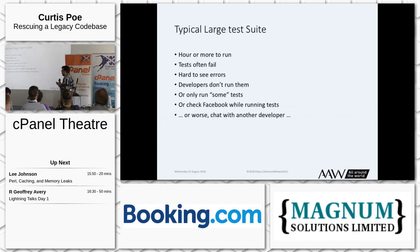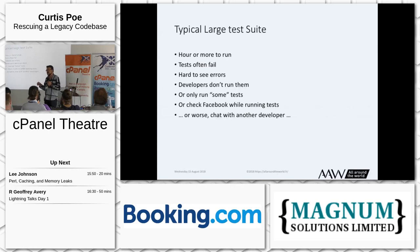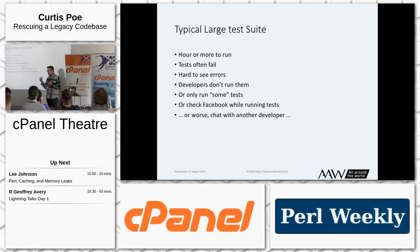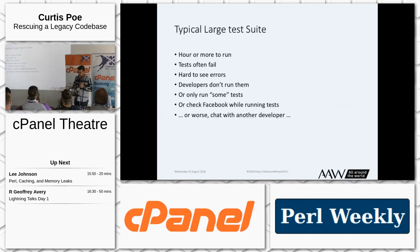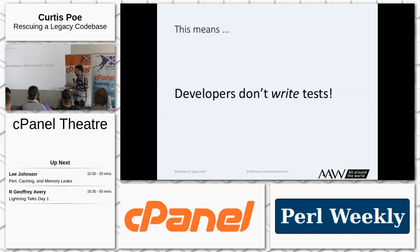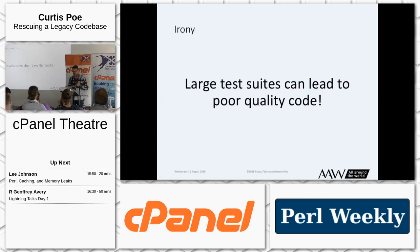So what happens? Developers don't run those tests, because you don't want to sit around for an hour doing nothing, or they only run some of the tests they think impact their work. You're lucky if you have continuous integration to run the full suite. Or they run the full suite and sit around checking Facebook while waiting, or talking to other developers and killing their productivity too. Developers actually stop writing tests quite often when you have large test suites. The irony is a large test suite can actually lead to poor quality code.